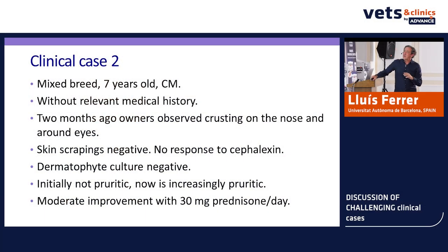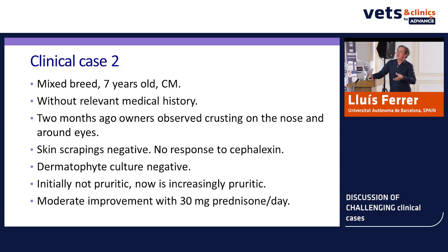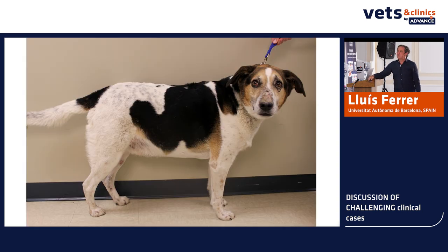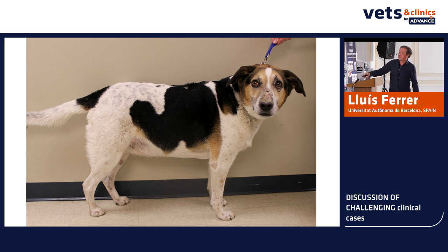Case two: the diagnosis was easy and you will make it quickly, but the treatment was more tricky. A mixed breed dog, seven years old, castrated male, with nothing in the history. Owners started seeing crusting on the nose and around the eyes. Skin scrapings negative, dermatophyte culture negative, no pruritus initially but now slightly more pruritic. A trial of prednisone at 30 mg/day (approximately 1 mg/kg) did not improve the dog.